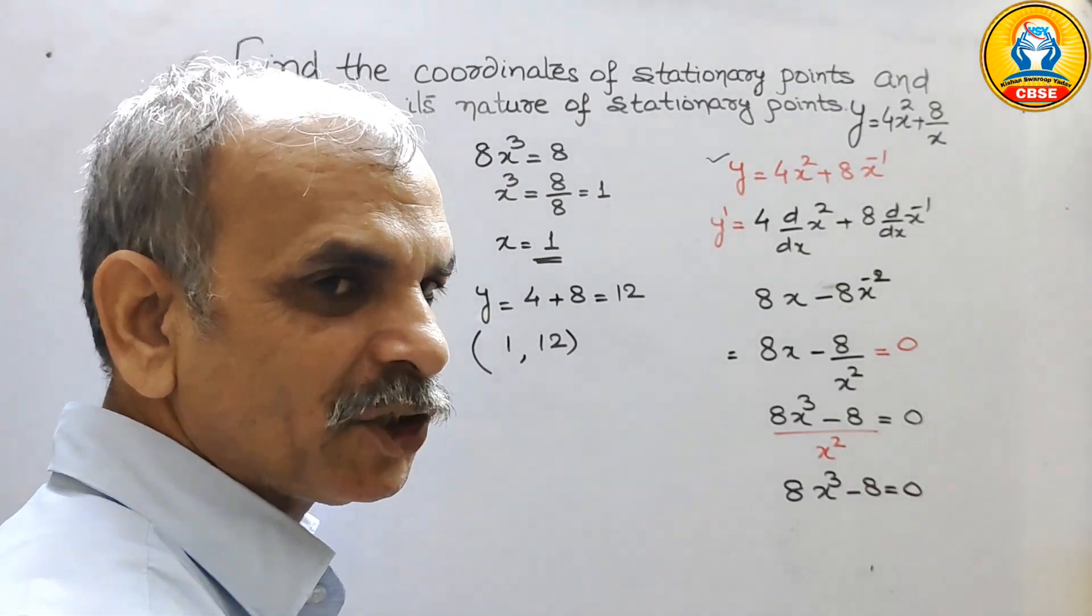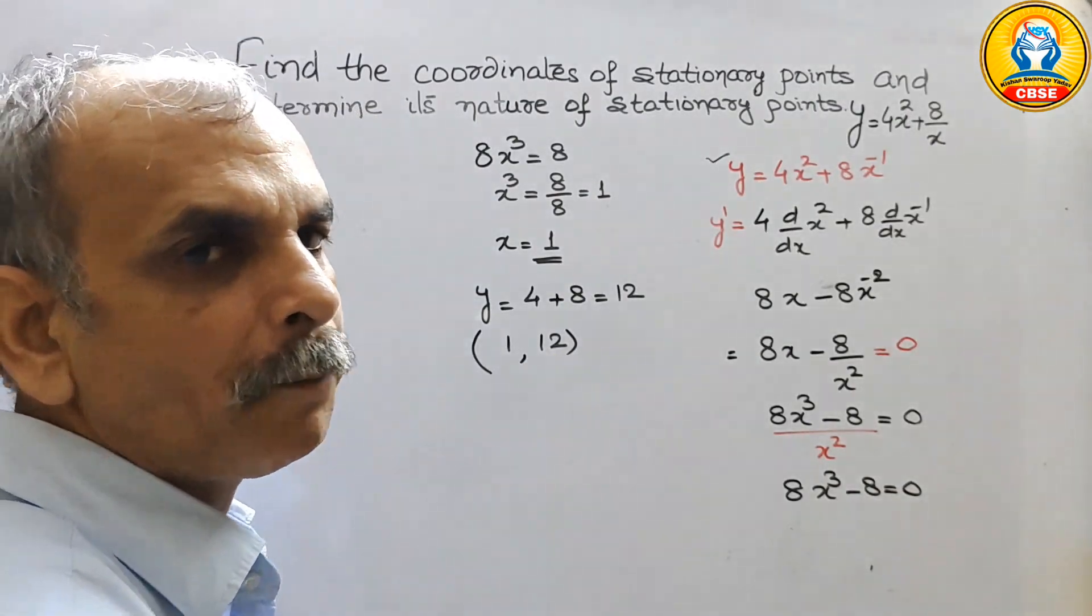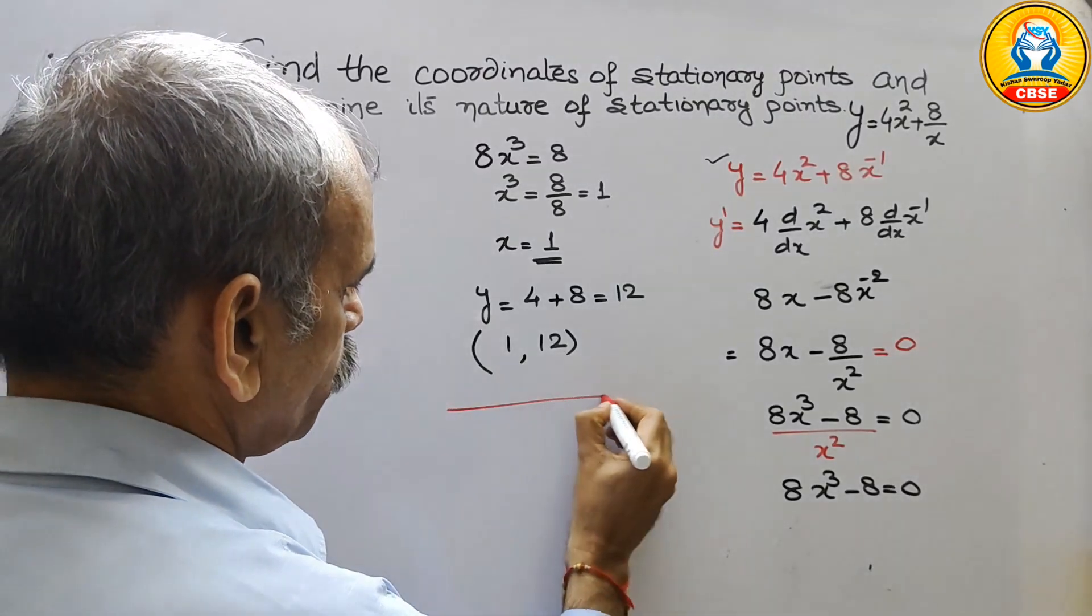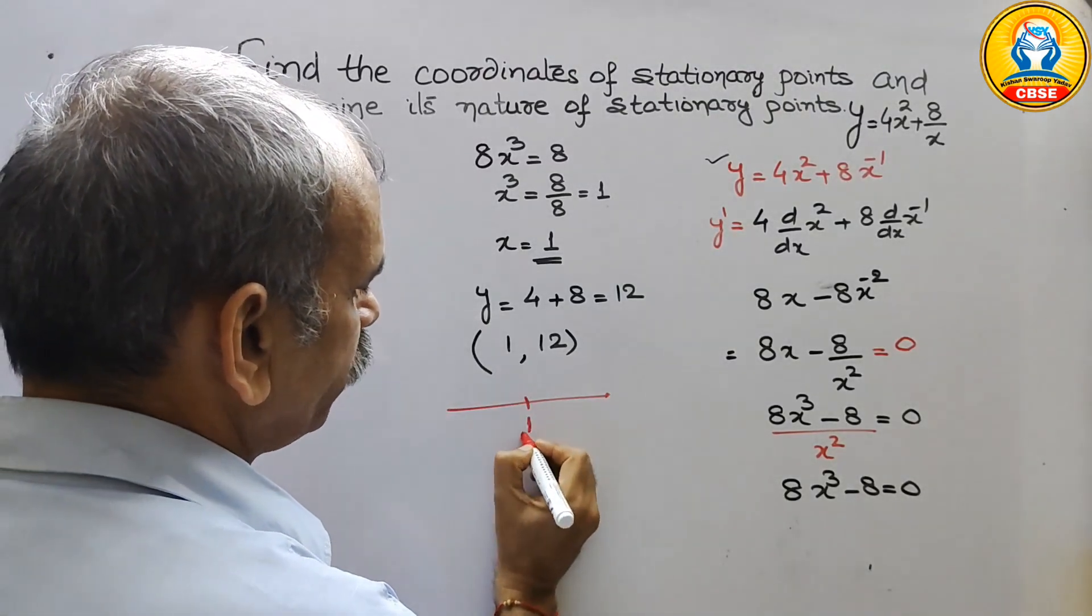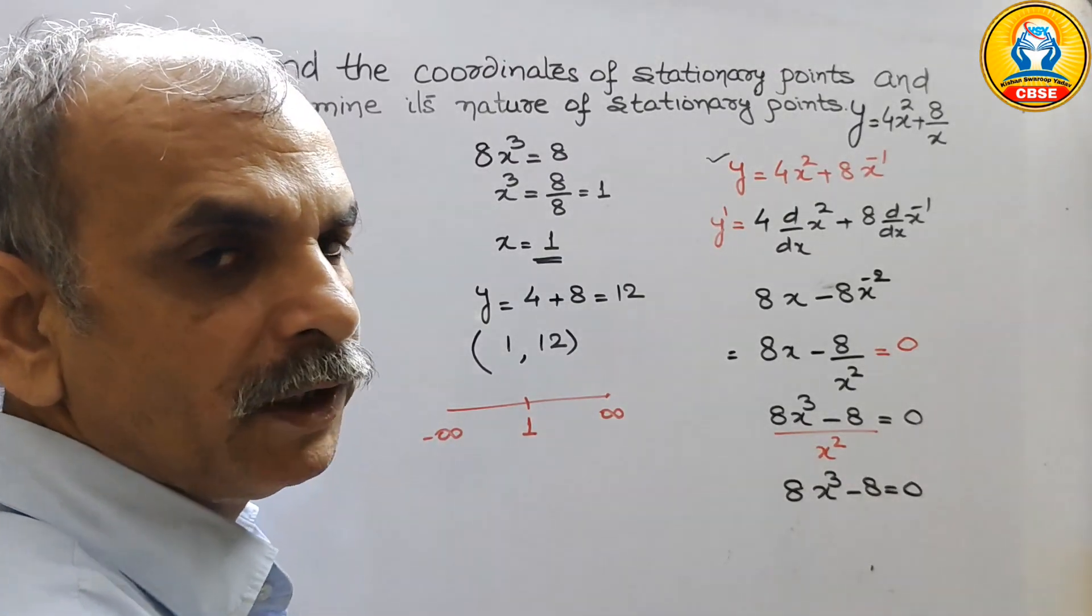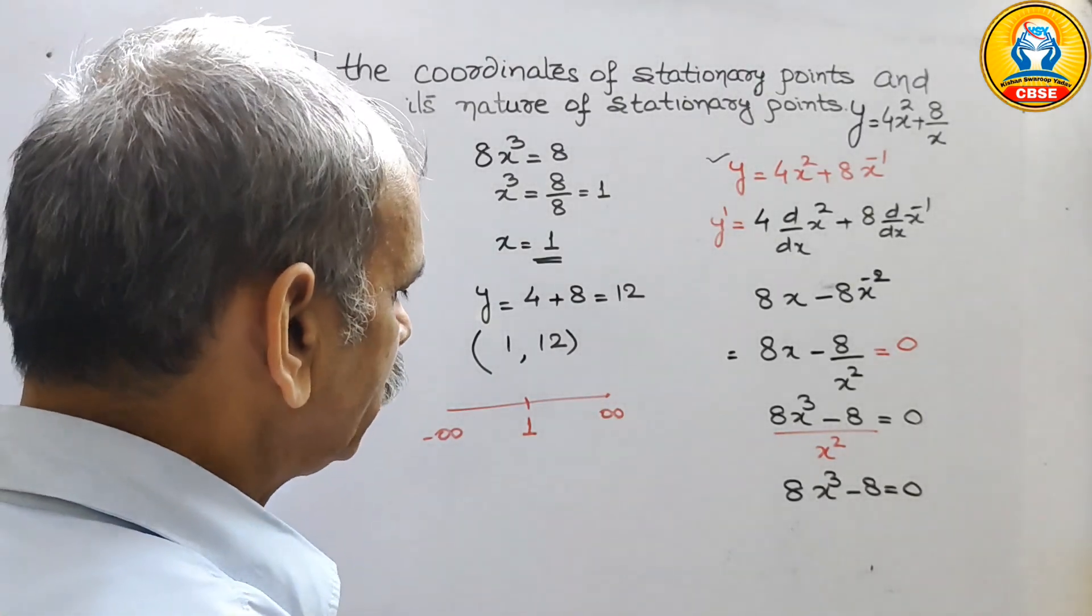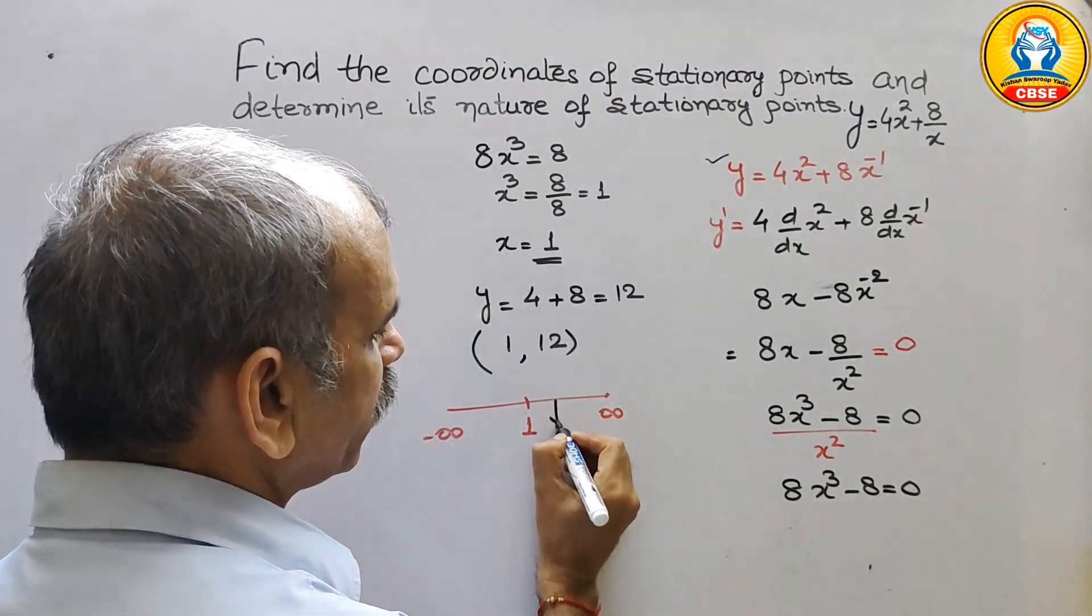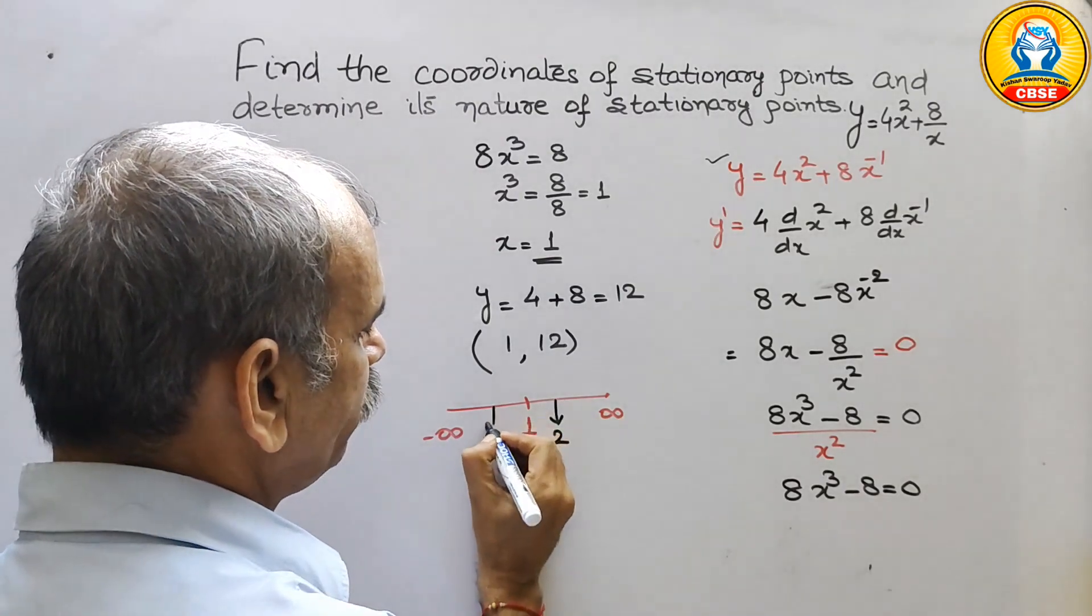Now we have to tell them the nature, for that we have to draw a number line. So this is 1, this is infinity, this is minus infinity. So here we will take 2 points. Here we will take 2 and here we will take 0.